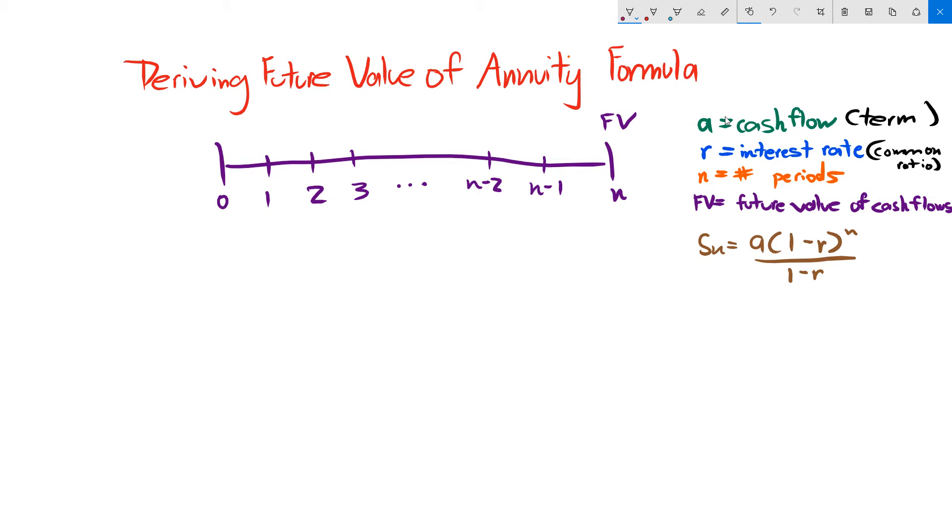Hi, today we're going to talk about deriving the future value of an annuity formula. An annuity is a recurring set of cash flows that you receive, and the way to calculate the future value of it is to consider the amount of interest that you're earning on each of the cash flows throughout the annuity. This is useful in finance because you deal with annuities quite often, and this video is going to show how to derive the formula to get the future value of an annuity.